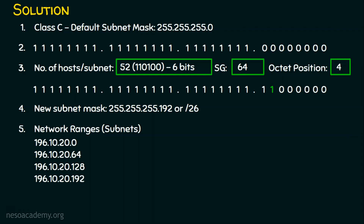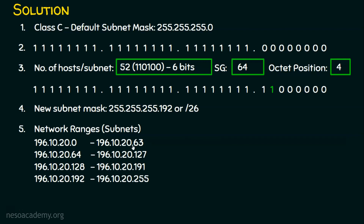I will explain why we generate only four subnetworks. The first subnet is 196.10.20.0 to 196.10.20.63. Since the third subnetwork starts at .128, the second subnet ends at .127. Since the fourth subnetwork starts at .192, the third subnet ends at .191. The fourth subnet starts at .192.